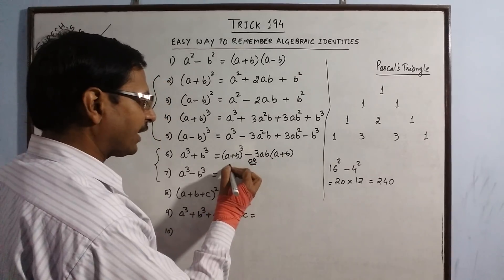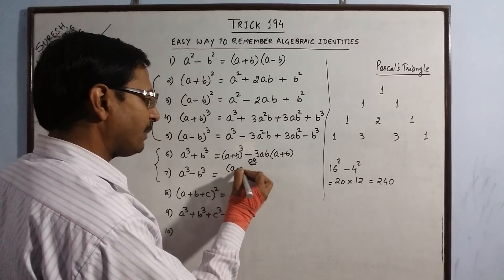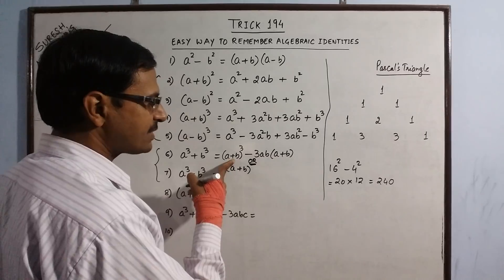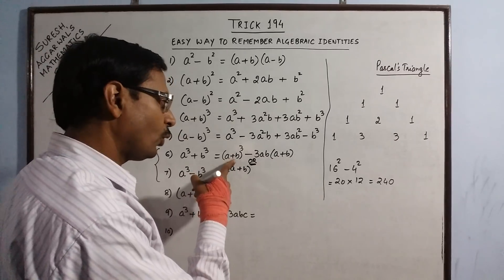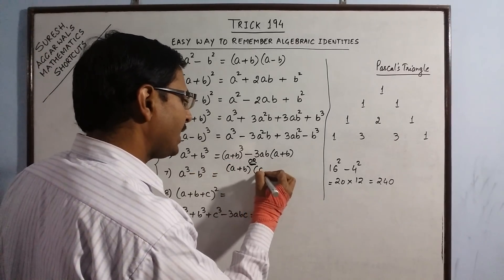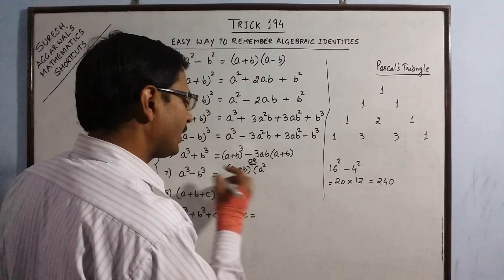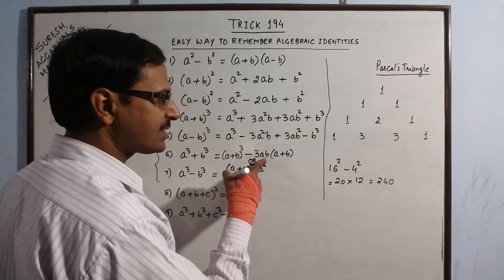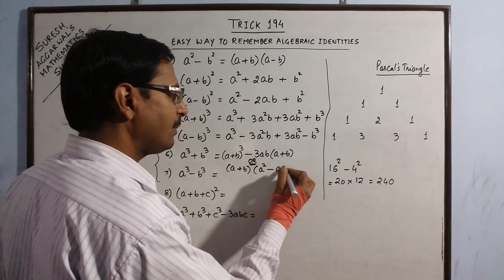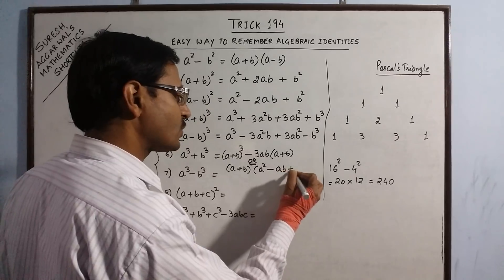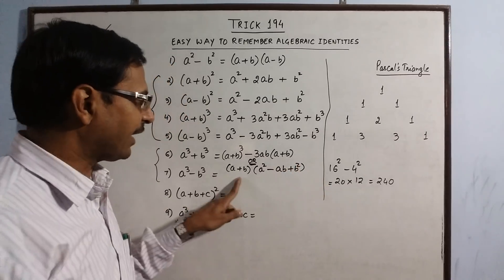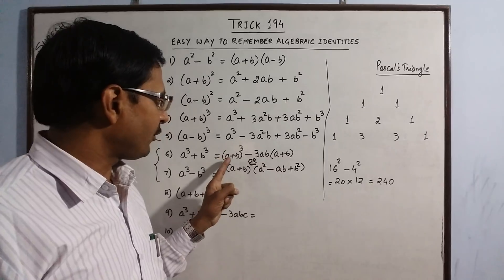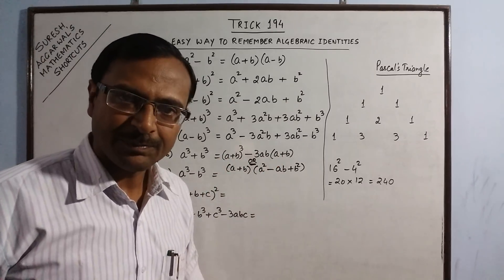Taking A plus B common, we have one more identity in factor form: A plus B, and the remaining factor is A plus B whole square. Opening that gives A square plus 2AB plus B square, and with minus 3AB we get minus AB plus B square. So this identity exists in factor form and also in the form involving A plus B whole cube.